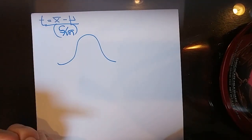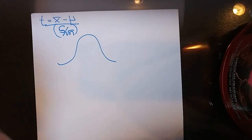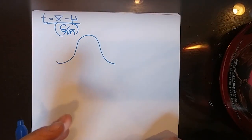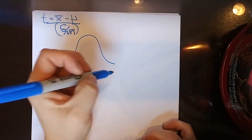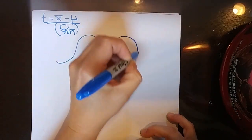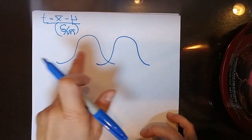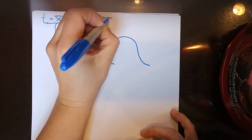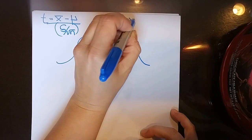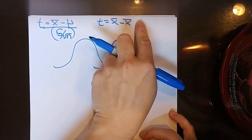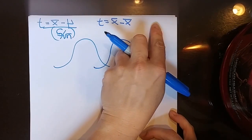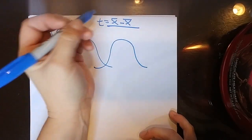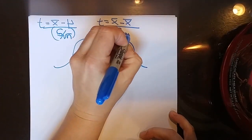Remember we went on and did a two-sample t-test — specifically the independent sample t. We had two distributions, and we wanted to see how the two distributions compared to each other. We ended up with a formula where we had two sample means, subtracted out what we thought they would be — hypothesized to be zero — and then divided by the pooled standard deviation.